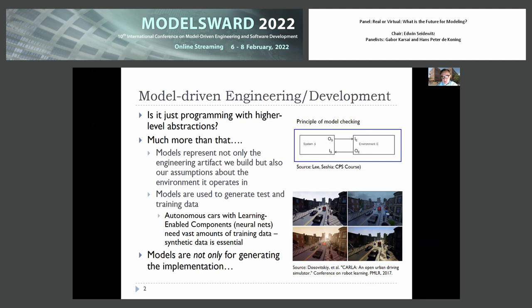We also use models to generate test data, and more importantly in the past few years, training data. If you are building an autonomous car with neural network-based perception algorithms, you need vast amounts of training data, which is very hard to obtain from a physical environment — you'd really have to drive billions of miles to get any acceptable level of sampling. So often these networks are trained on synthetic data.